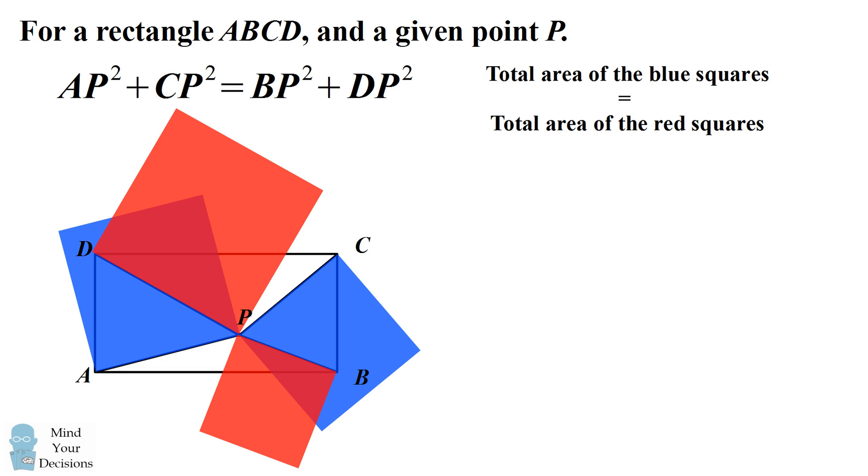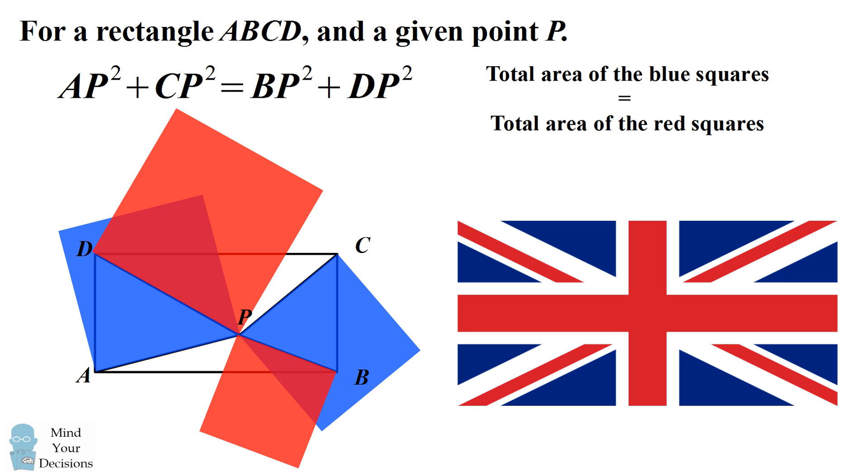Now this diagram has a vague resemblance to the union jack, and so this is actually known as the British flag theorem. It's rarely taught in school, but as we'll see it's actually an extension of the Pythagorean theorem.